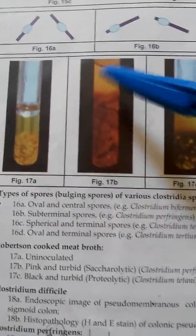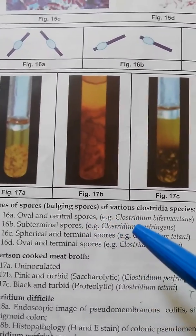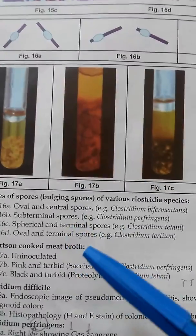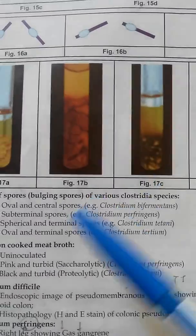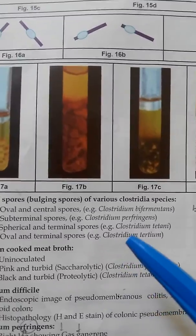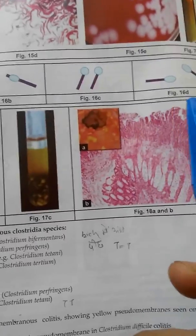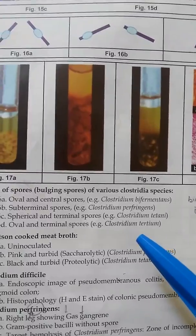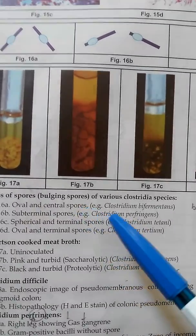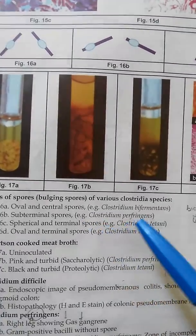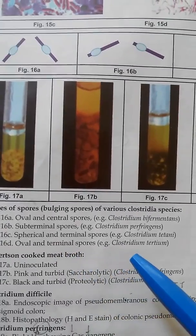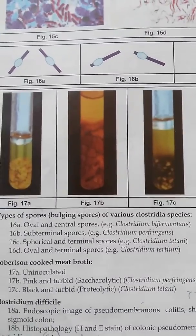16a is an oval and central spore seen in Clostridium bifermentans. 16b is a subterminal spore seen in Clostridium perfringens. 16c shows rounded, spherical, and terminal spores seen in Clostridium tetani. 16d shows oval and terminal spores seen in Clostridium tertium. To revise: oval and central — C. bifermentans; subterminal — C. perfringens; spherical and terminal — C. tetani; oval and terminal — C. tertium.